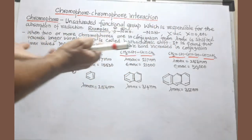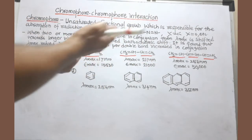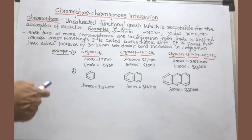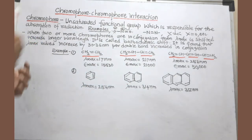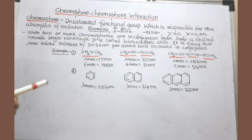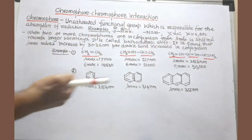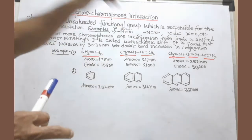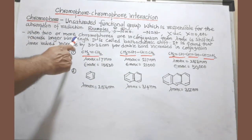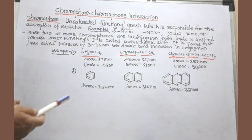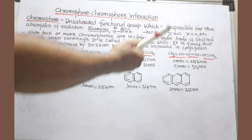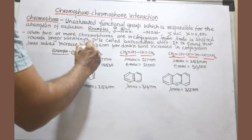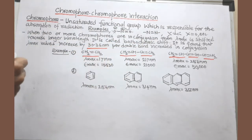When these chromophores are joined together and are in conjugation, the lambda max is shifted towards red — towards longer wavelength, towards lower energy transition. This effect is called chromophore-chromophore interaction, and it is also called bathochromic shift. When we increase conjugation, the lambda max is typically shifted by a value of 30 to 35 nanometers per double bond.